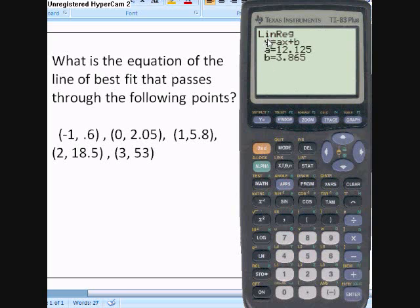And there you go. y equals ax plus b. Then they tell you that a is 12.125 there, and b is 3.865. Therefore, our equation is, the line of best fit's equation is, 12.125x, just put the a in there, plus 3.865. So that's it.